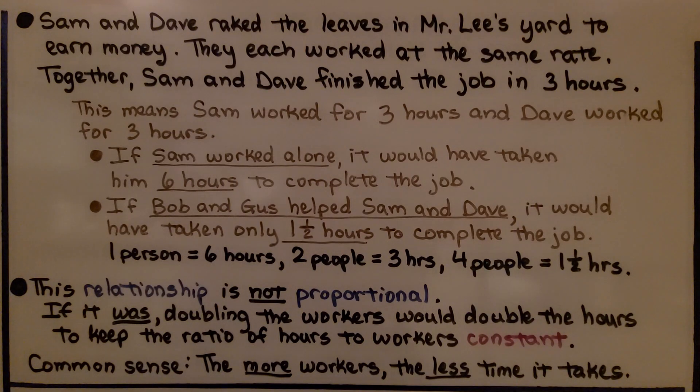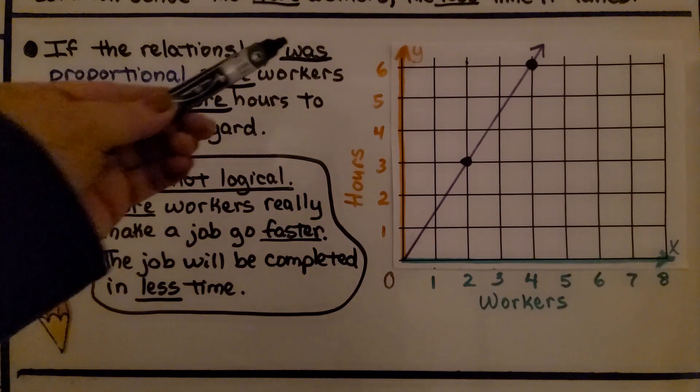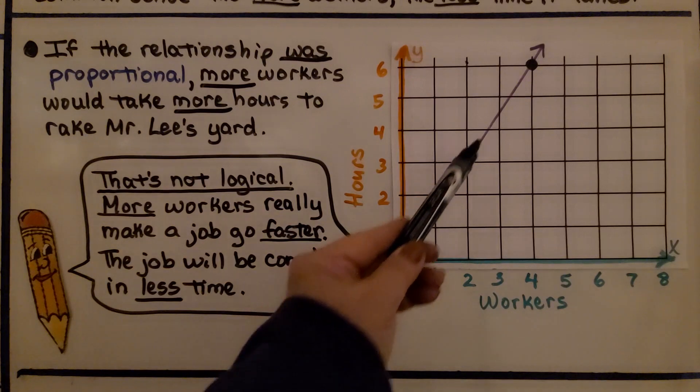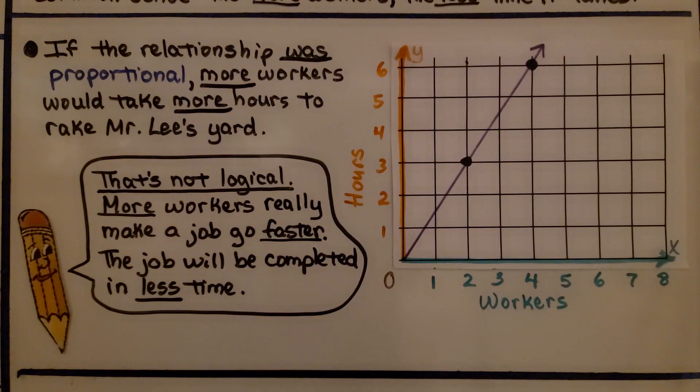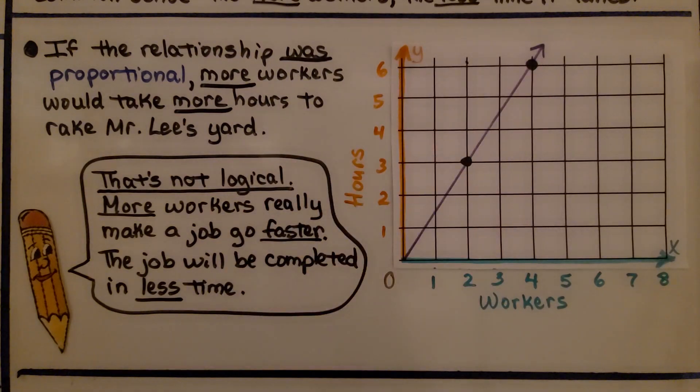This is not a proportional relationship because the more people working, the less the hours are. If the relationship was proportional, more workers would make more hours to rake Mr. Lee's yard. That's not logical. More workers really makes a job go faster. So it's not proportional.